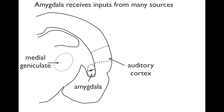Here we're looking at a cross-section of a mouse's brain, and you can see the amygdala in the lower right. The amygdala receives inputs from many different brain regions, but two are especially important for this study.